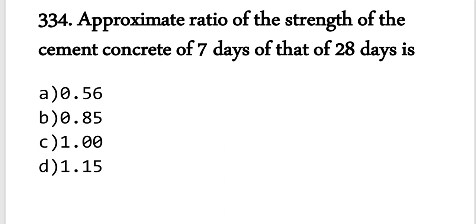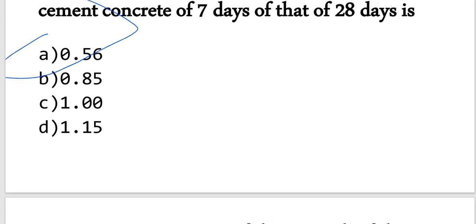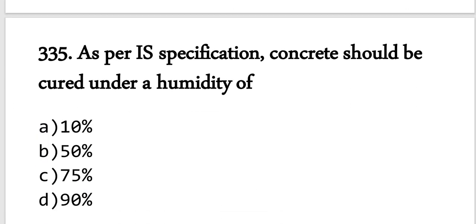Question number 334: The approximate ratio of the strength of cement concrete at 7 days to 28 days — since 28-day strength is the basis and 7-day strength is lower, the ratio is 0.56.